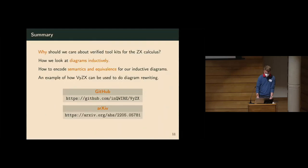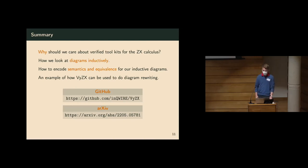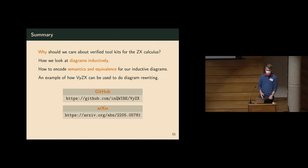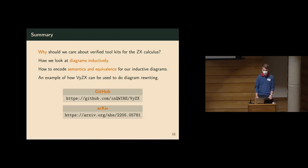Hopping back to the presentation to quickly summarize: we talked about why we want to verify the ZX calculus and why it's important in the quantum world to have guarantees for correctness, especially in optimizers. We looked at our inductive structuring of ZX diagrams, how they relate to string diagrams. We looked at how we encoded semantics and equivalence for inductive diagrams and the rules we built. We looked at a small example of how VISiX can be used for diagrammatic rewriting. On the slide you'll also find our GitHub and arXiv links. Thank you very much.